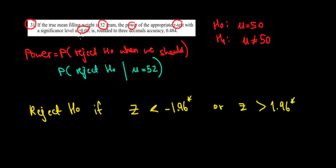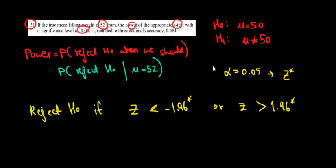Recall that at significance level alpha of 0.05, the critical values are 1.96 and minus 1.96. There are always two critical values because it's a symmetric distribution. The standard normal distribution is symmetric and we have a two-sided test, meaning we could find a rejection value on either the right side or the left side of the distribution.